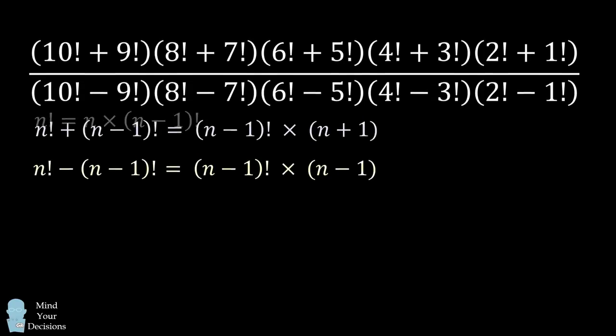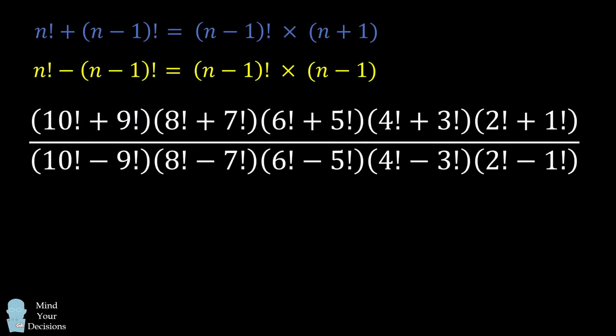So let's use these formulas to simplify this fraction. We'll look at the first term in the numerator and denominator. 10 factorial plus 9 factorial can be simplified using the formula for the sum, and 10 factorial minus 9 factorial can be simplified using the formula for the difference.